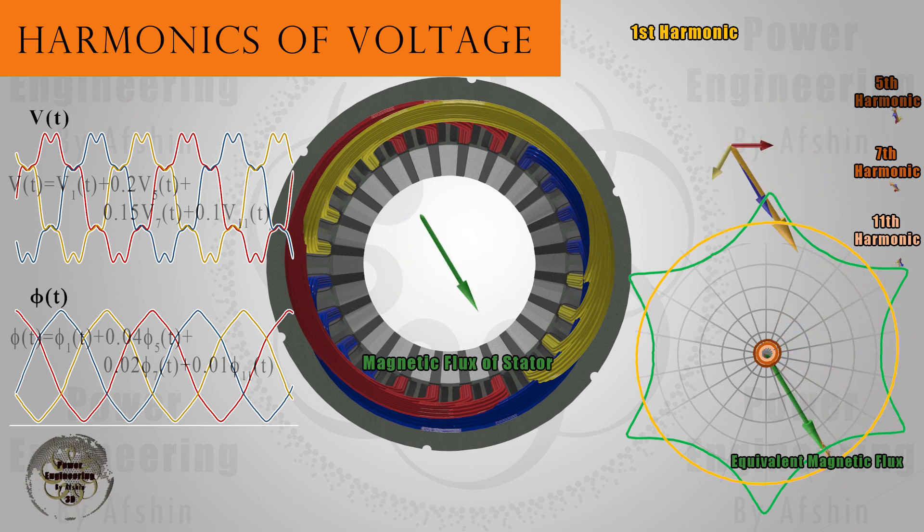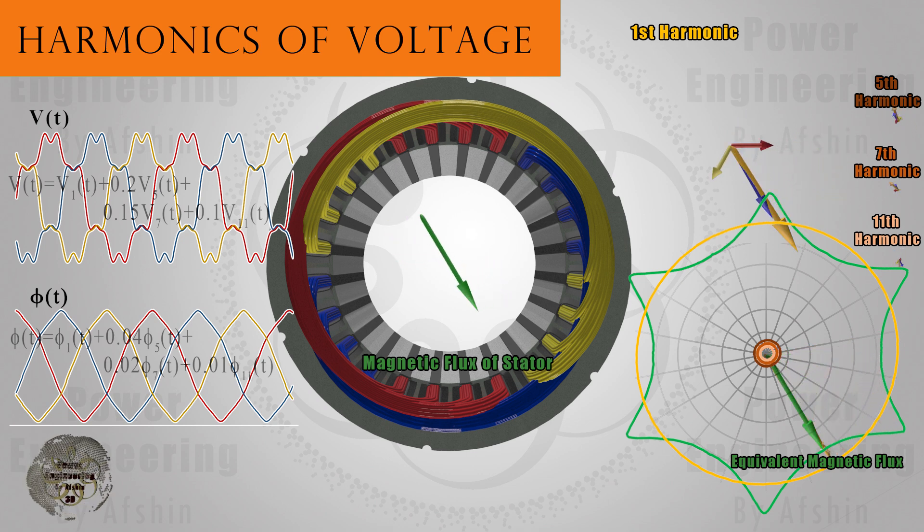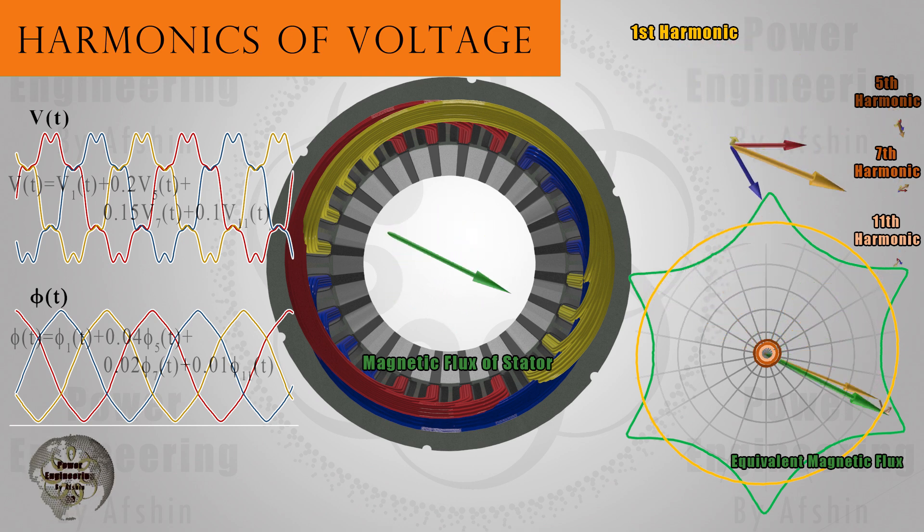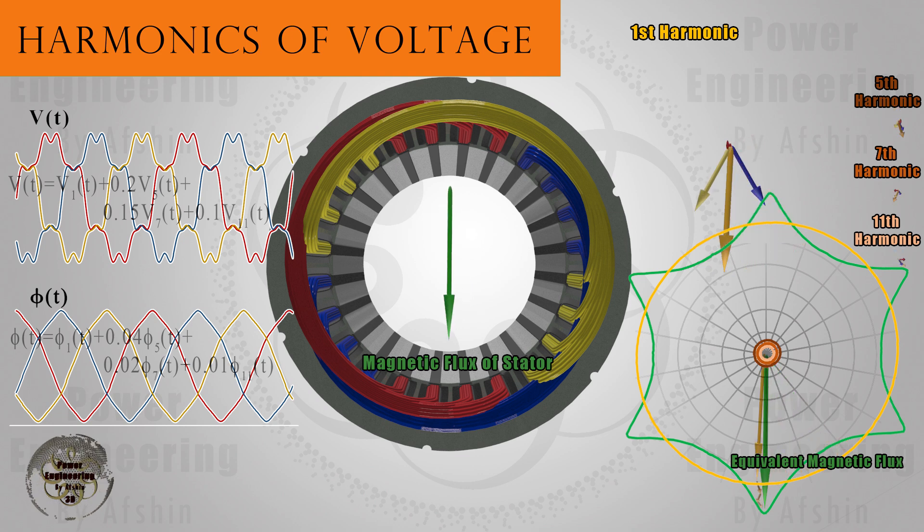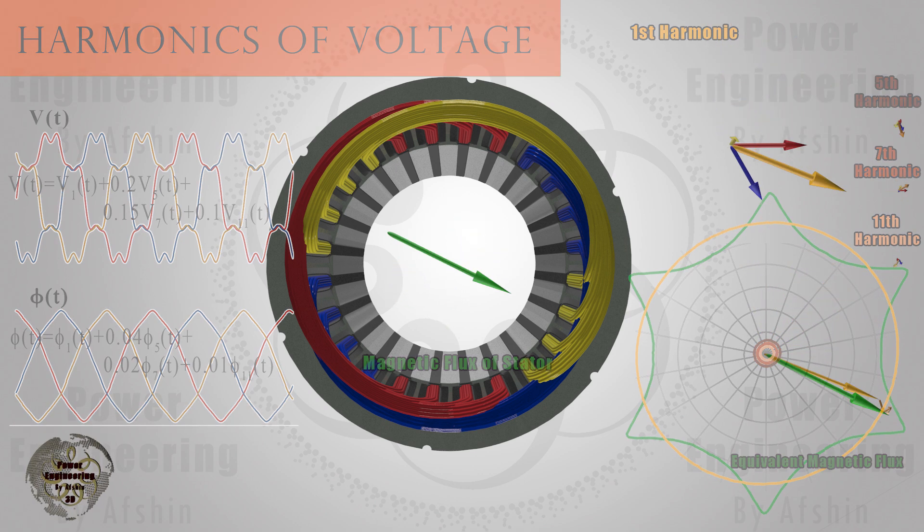On the left side, you can see the amplitude curves of the rotational magnetic field, voltages, and magnetic fluxes. On the right side, you can observe the magnetic field corresponding to each harmonic. The presence of harmonics leads to increased vibration, resistance due to skin effect, and iron and copper losses in the motor, thereby reducing its efficiency. Moreover, it may also cause saturation in the stator.